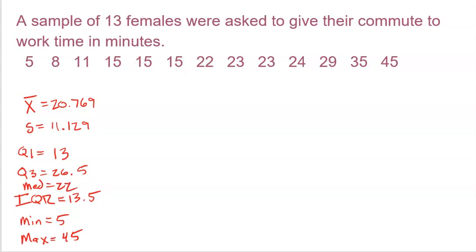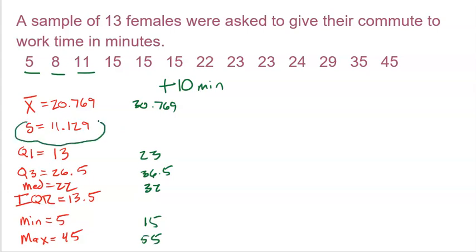What happens if we say there was bad traffic one day and everybody's commute time had 10 minutes added to it. Everyone. So this became a 15, this became an 18, this became a 21. Every value had 10 minutes added to it. Well, the mean would become 30.769. The Q1 would become 23. Q3 would become 36.5. The median would become 32. The min would become 15, the max would become 55. But measures of spread, standard deviation, IQR, and then range, max minus min, which I could do would be 40. Those are all going to stay the same. Because every value is moving up, so it's not becoming more spread out. It's just moving up, not changing the spread of the data. So standard deviation, IQR would stay completely put, not going to change at all.